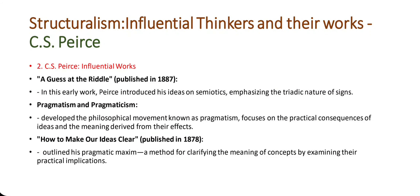First is A Guess at the Riddle, published in 1887. In this early work, Peirce introduced his ideas on semiotics, emphasizing the triadic nature of signs. He classified signs into three categories — icon, index, and symbol — a framework that became fundamental to semiotic analysis.